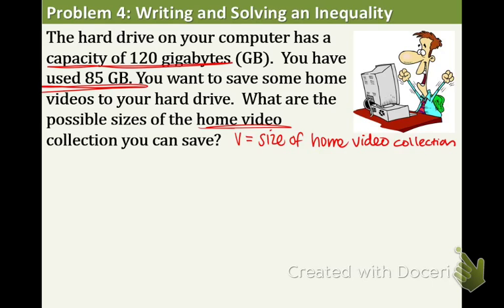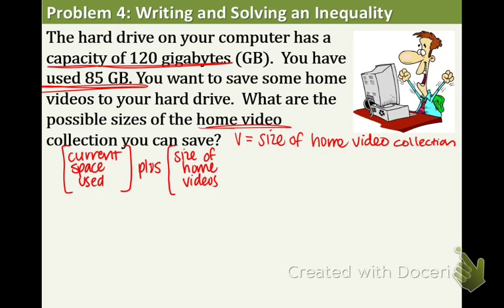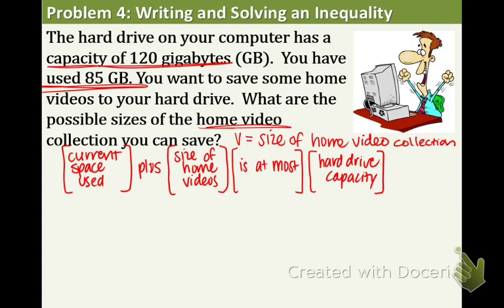Make sure you define your variable like that. Now let's draw a little model to summarize this: current space used plus size of home videos is at most hard drive capacity. The reason why we put 'is at most' is because capacity means you cannot go over whatever that number is. We cannot go over it. It just won't work. Your computer only has a certain size of space and we cannot go over that capacity.